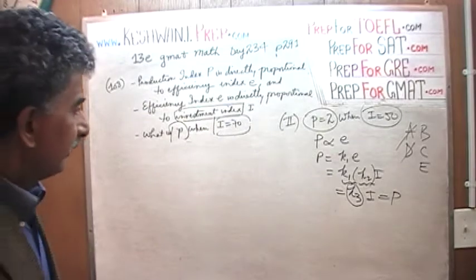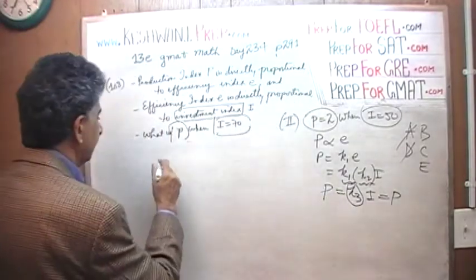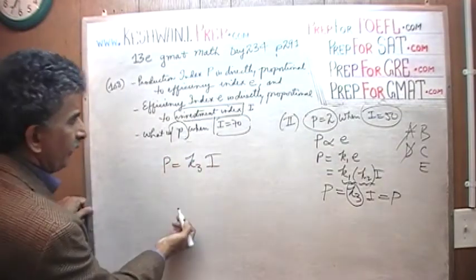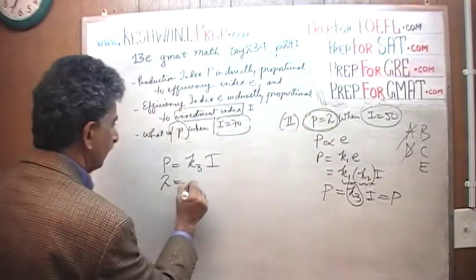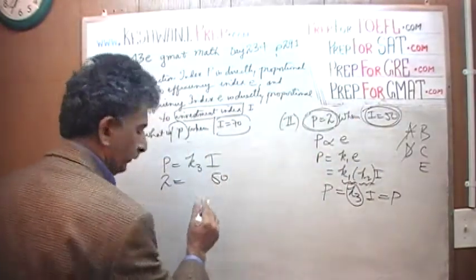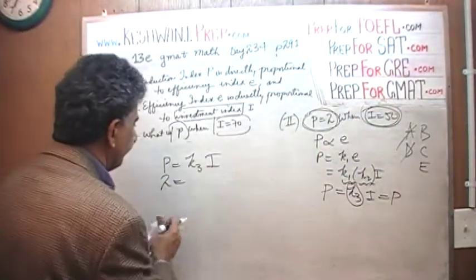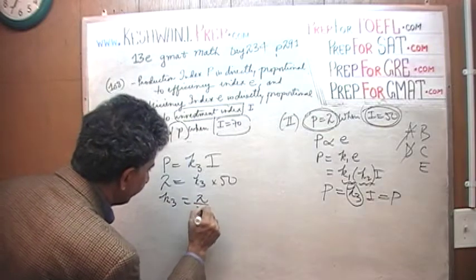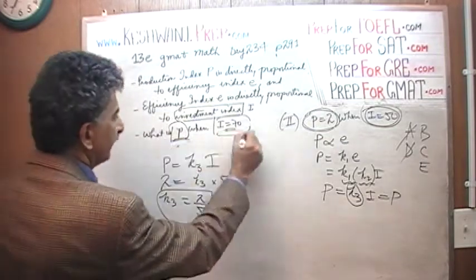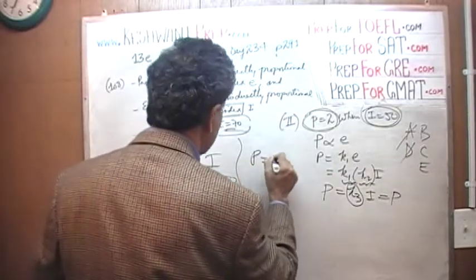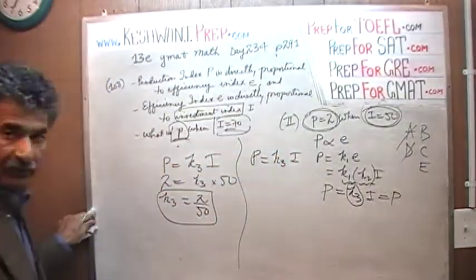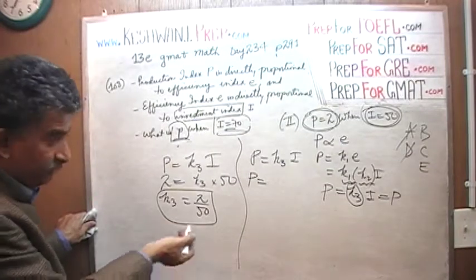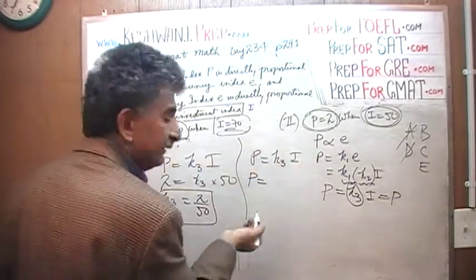Anyway, back to our problem here. P equals K3 times I. How are we going to find the value of K3? From this part right here, we are told that P equals 2 when I equals 50. Which means this K3 that we're looking for must simply be 2 over 50. And we're going to use this information to find P when I is 70. Same equation: P equals K3 times I. We already know the value of K3, K3 is 2 over 50. We don't actually have to do it out in the exam, you just have to realize that we're done. We can figure out the value of P. Second statement by itself is enough. The answer is B.